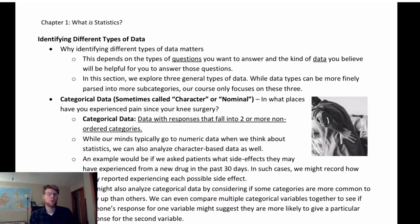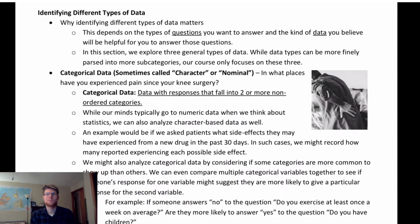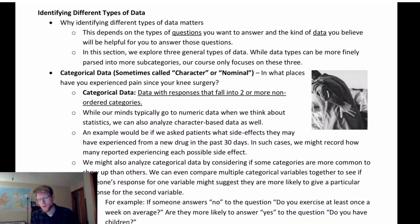We're going to talk about three broad categories of data. There are many ways to categorize data — some use four categories, some use two — but we're going to do three. The first type is categorical data: data that falls into two or more non-ordered categories. The non-ordered part is important because ordered categories fall under discrete data. This is sometimes called character data or nominal data.